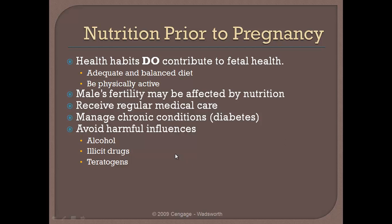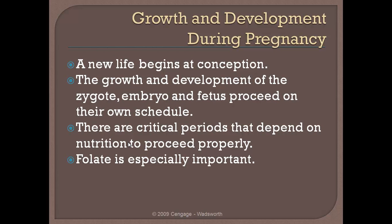We'll talk about avoiding alcohol, illicit drugs, and teratogens later in the chapter. A new life begins at conception, and very quickly after conception we have rapid cellular division. It's amazing how quickly we see growth and development of the zygote, then embryo, then ultimately fetus. Unlike a construction site, development cannot be put on hold — the process continues, and if key building blocks are not available, the pregnancy may terminate.